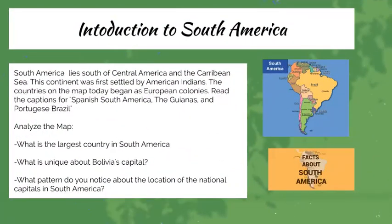When we're looking at our introduction to South America, we're going to look at the map where it shows that it lies south of Central America in the Caribbean Sea. This continent was first settled by American Indians, and the countries on the map today began as European colonies. We're going to explore the map by looking at the captions shown on Sabas and through our own political and physical maps to understand the features of this area. We'll also talk about the largest country through an interactive game that allows us to compare sizes.